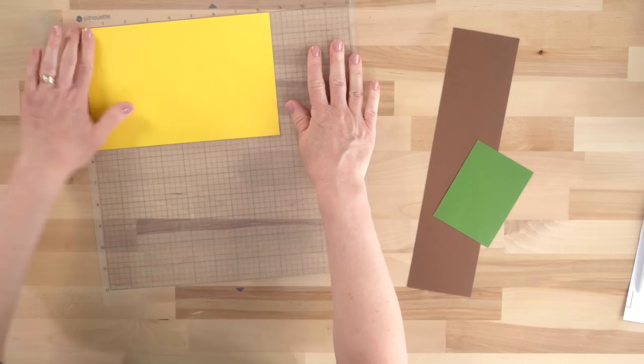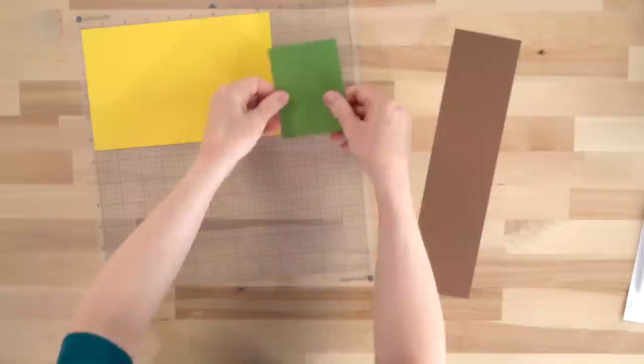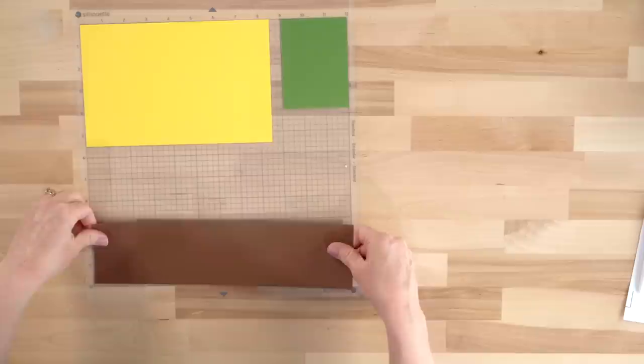All right, so here's my cutting mat. I'm just going to remove the protective shield, and place my paper on my mat the same way I had it on my virtual mat in the software. So my yellow paper goes in the upper left. My green paper is in the upper right, where the leaf will cut.